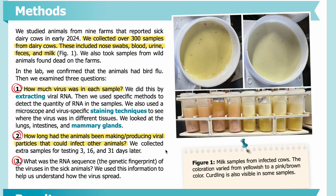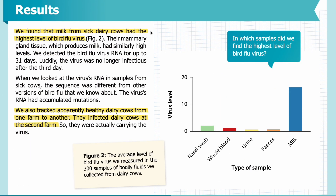We collected extra samples for testing 3, 16, and 31 days later. Third, what was the RNA sequence — the genetic fingerprint — of the viruses in the sick animals? We used this information to help us understand how the virus spread. Results: We found that milk from sick dairy cows had the highest level of bird flu virus.